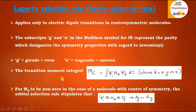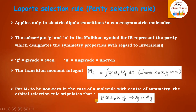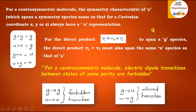These subscripts G and U represent the parity, which designates the symmetry properties with regard to inversion. G means gerade, meaning even, and U is ungerade, meaning uneven. For any electric dipole transition, the transition dipole moment is given by Mfi equals the integral of ψi · μk · ψf dτ, where k is x, y, or z representing the three directions. For Mfi to be non-zero, that is, to be an allowed transition, in the case of a molecule with central symmetry, the orbital selection rule states that the direct product of the three components ψi, μ, ψf should span the totally symmetric species, that is Ag or A1g.